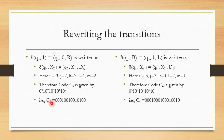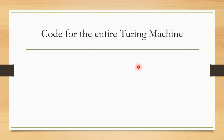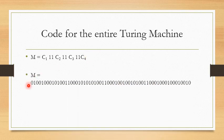Now that we have the binary representation for each transition code C1, C2, C3, and C4, the next step is to combine all of them. The code for the entire Turing machine is: C1 11 C2 11 C3 11 C4. Together these constitute the full binary encoding of the given Turing machine, represented entirely as a combination of zeros and ones.